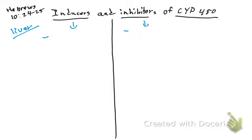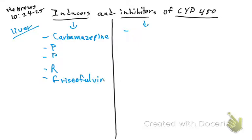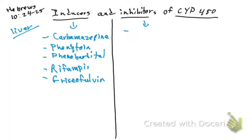We're going to mention five inducers. We have carbamazepine, phenytoin, phenobarbital, rifampin, and griseofulvin. So if you give any of those to a patient — carbamazepine, phenytoin, phenobarbital, rifampin, griseofulvin — you are inducing the CYP450, meaning the CYP450 is going to be working more.